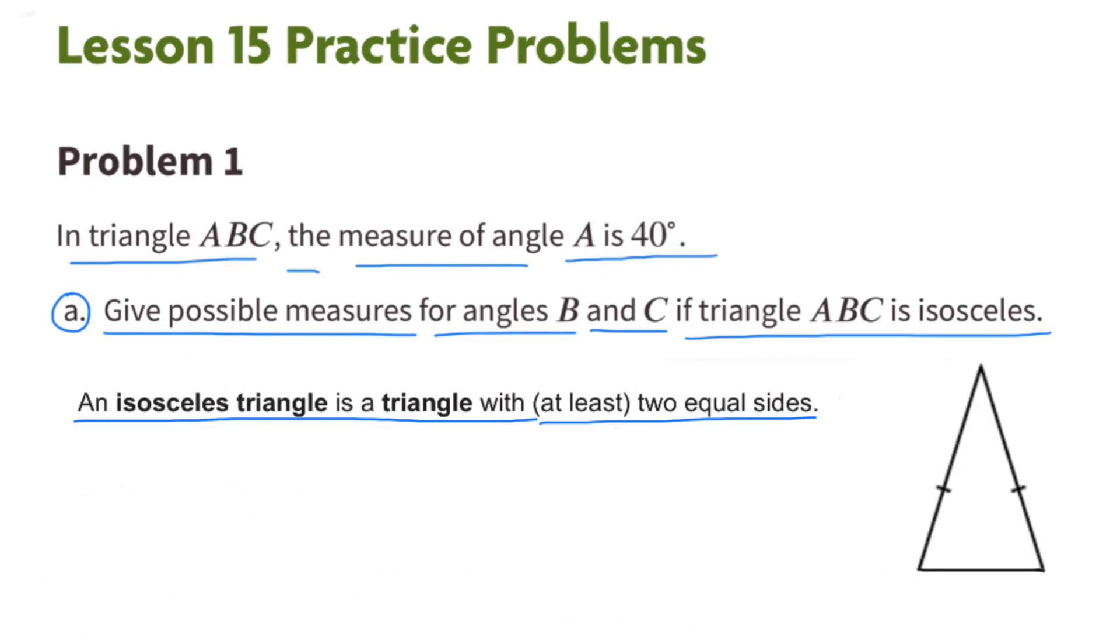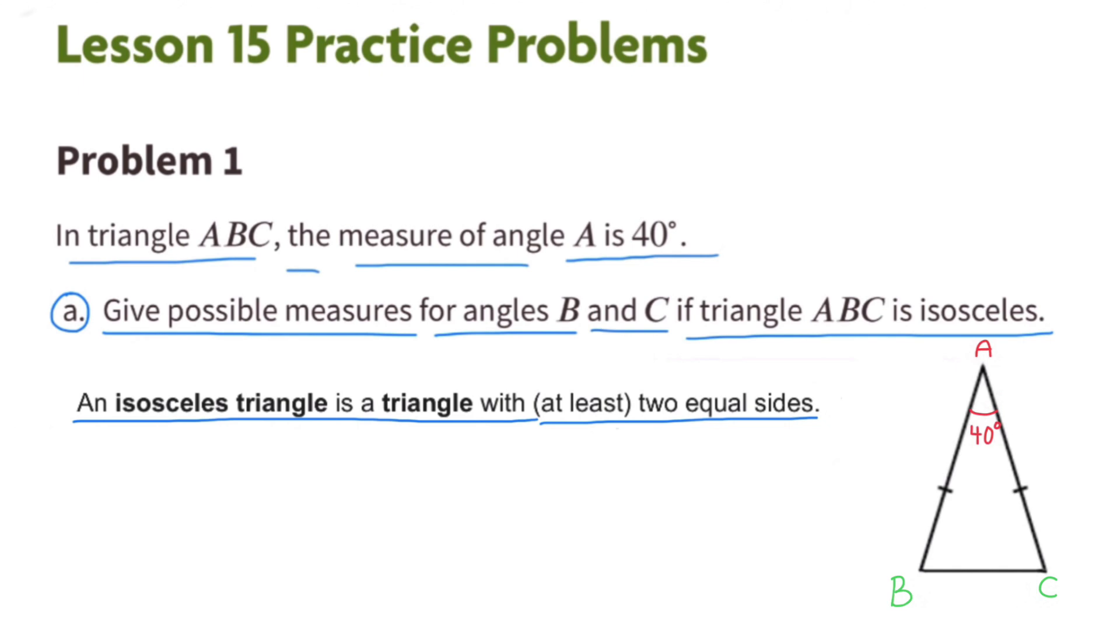An isosceles triangle is a triangle with at least two equal sides. This angle in red would represent angle A of 40 degrees. The bottom angles would represent angles B and C. Since all three of the angles in a triangle will total 180 degrees...